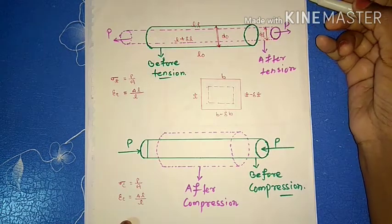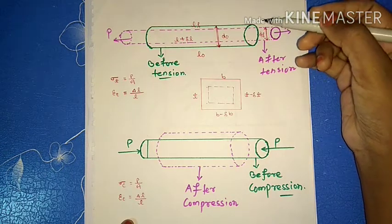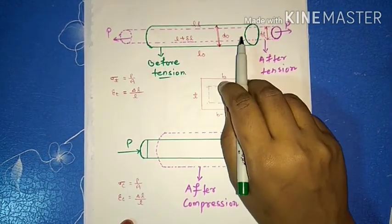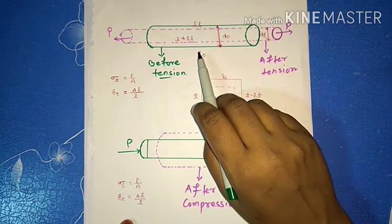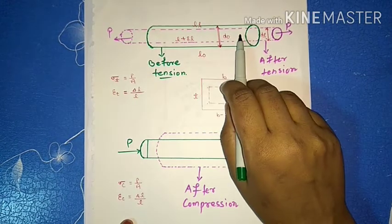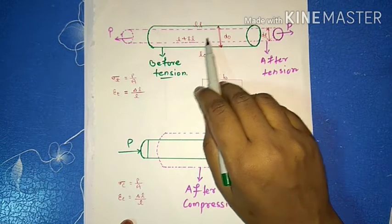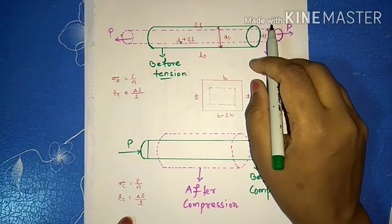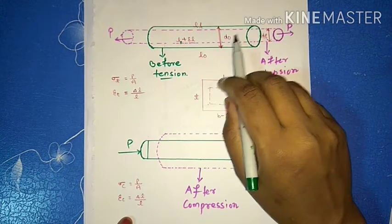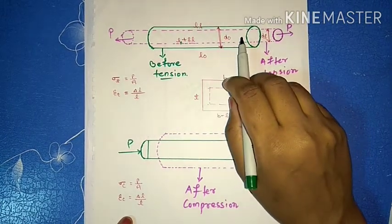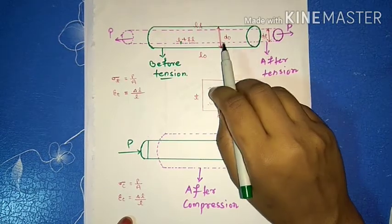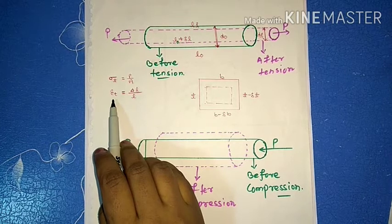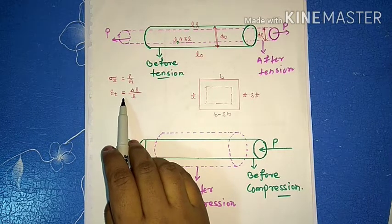For example, consider a structural member subjected to two equal and opposite tensile forces. The member tends to elongate or increase in length. The initial length is L₀, and after applying force P, the length becomes L₀ plus delta L. Tensile stress sigma_t equals P divided by A, and longitudinal tensile strain equals delta L divided by L.